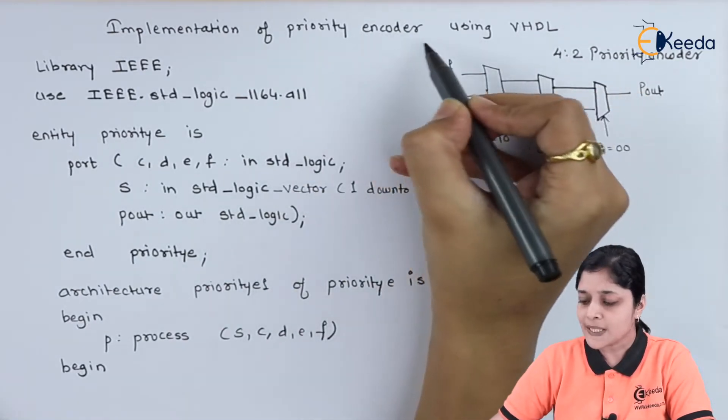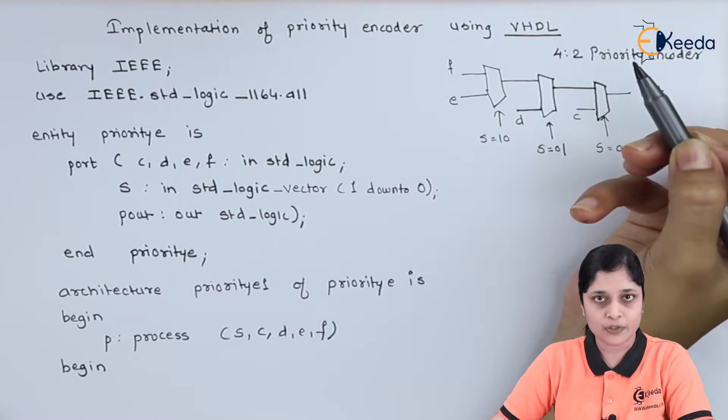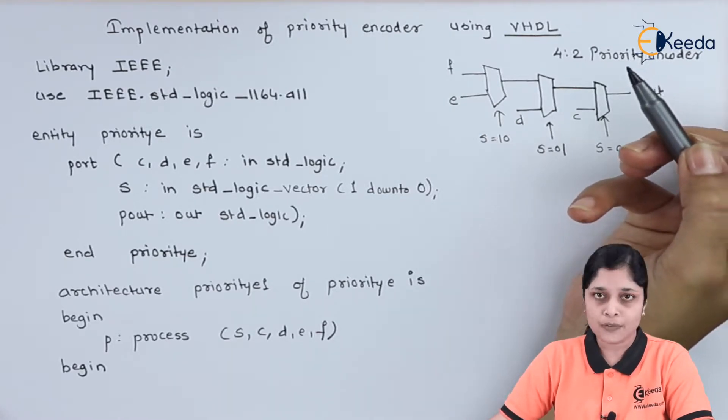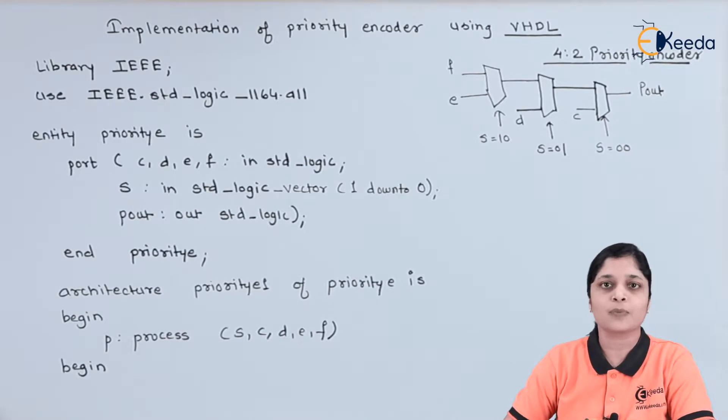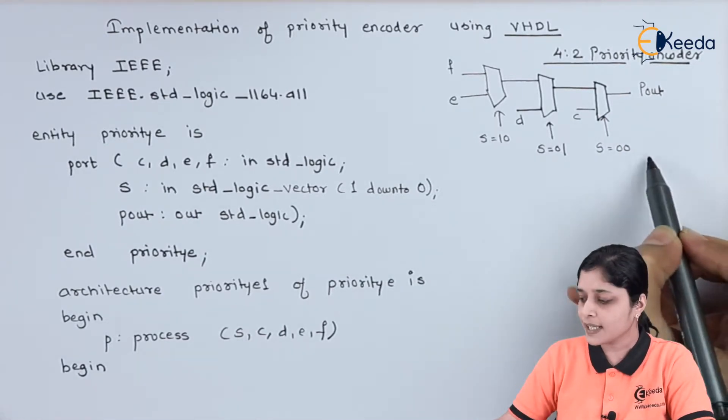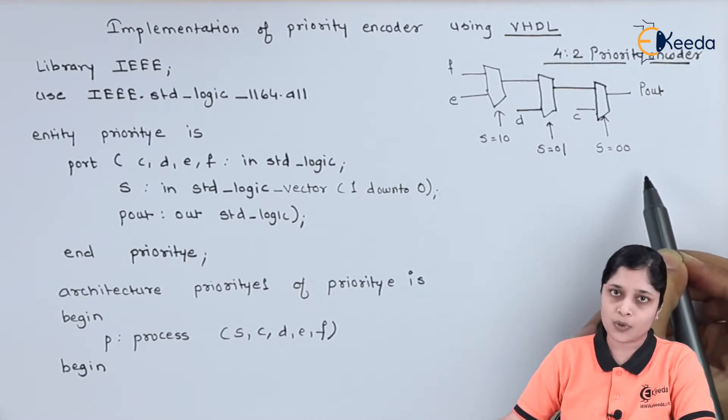Implementation of priority encoder using VHDL language. First of all, we have to consider the 4-to-2 priority encoder to design the program using VHDL. This is the diagram for priority encoder. According to this logic diagram, we can design the program.